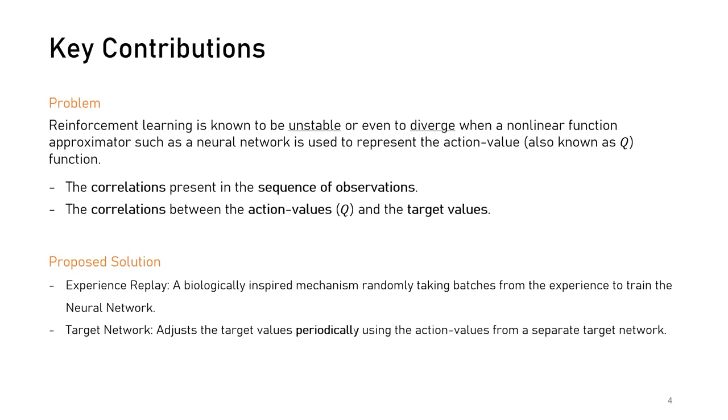Now let's take a look at the key contributions. Before this work, non-linear approximators like neural networks were unstable and often diverged during training. This paper solved two problems with that. Firstly, there was a correlation present in the sequence of observations, and secondly, there was also a correlation between the predicted Q value and the target value. To break these correlations, this work proposed experience replay and employed a separate target network.